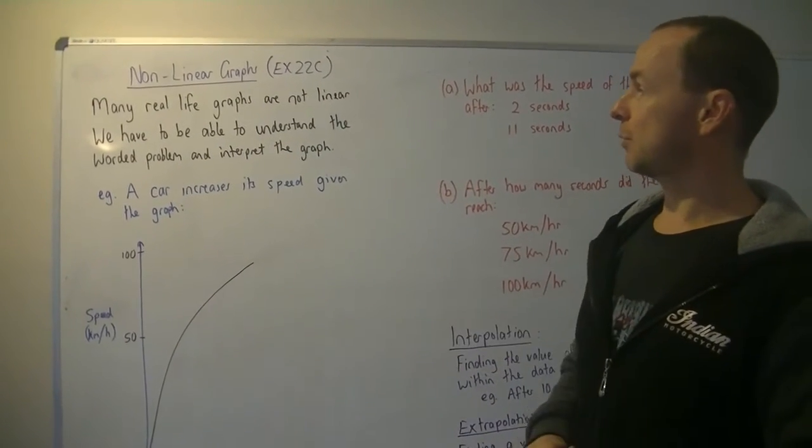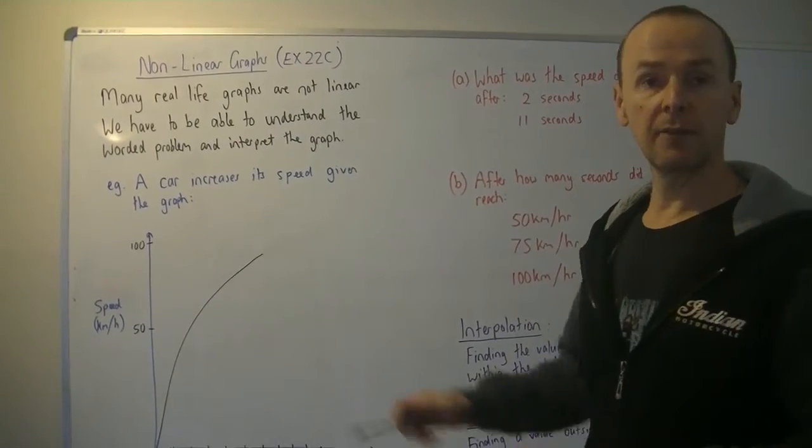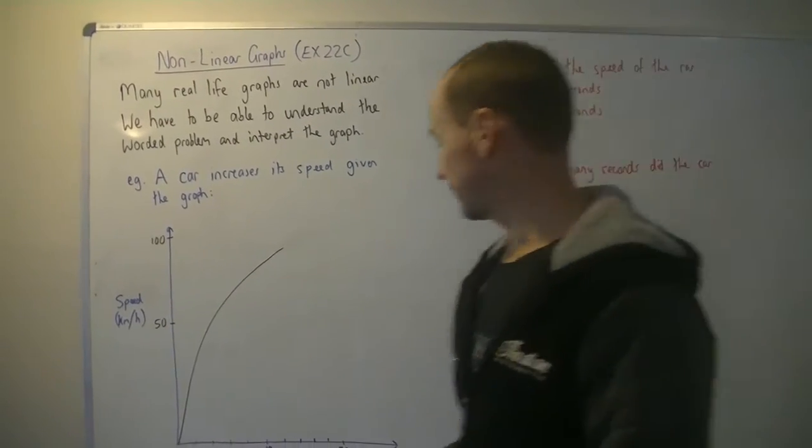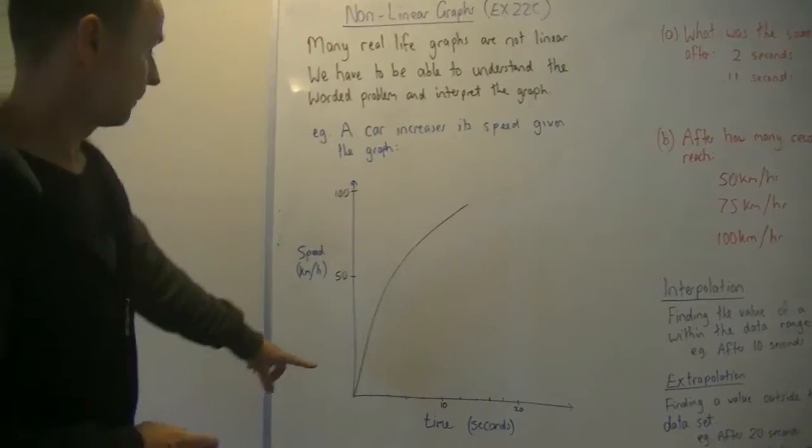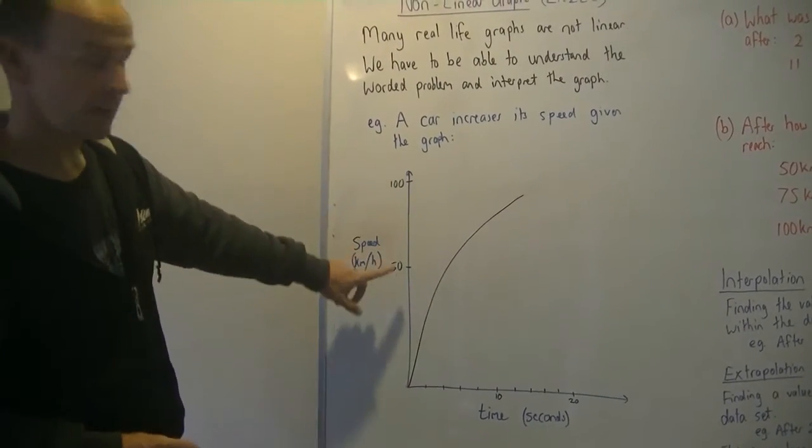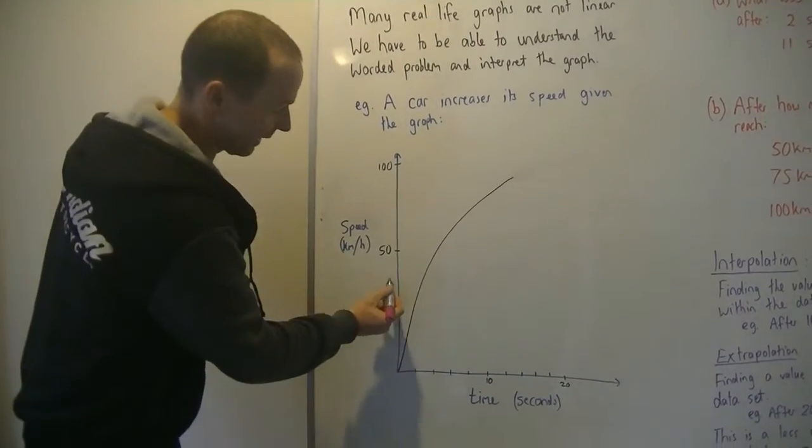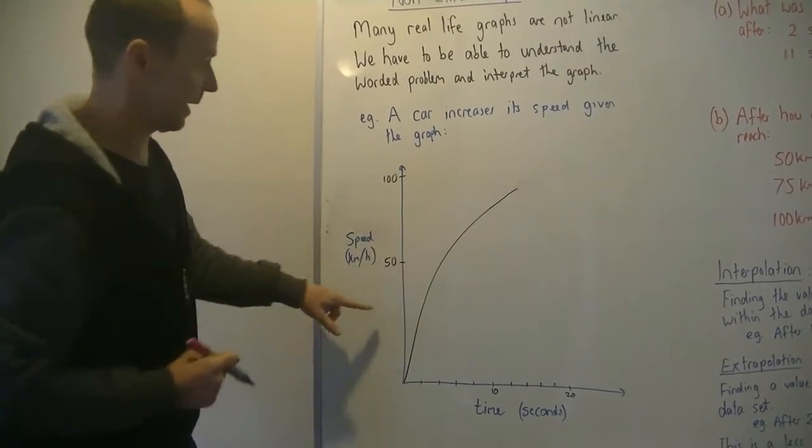Alright, so this first example, a car increases its speed given by this graph here. So let's have a look. First thing you know is the speed, it's got a 50 and a 100. So you have to be smart enough to be able to work out all the other increments up to there.